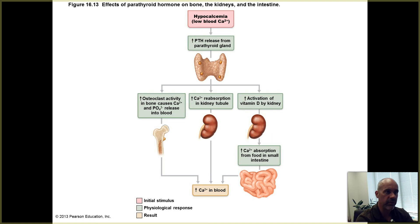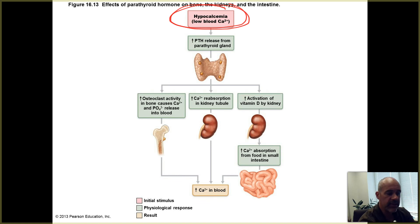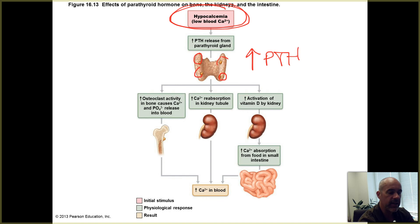The stimulus that triggers PTH secretion is hypocalcemia — that term refers to low blood calcium. If calcium is low in the blood, it's going to be low in all of your body fluids as well. This is a type of humoral stimulation. Low calcium levels cause the parathyroid glands to sense that themselves and increase PTH production.